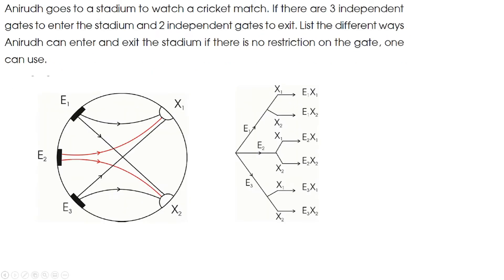Now let us understand this with an example. Anirut goes to a stadium to watch a cricket match. If there are three independent gates to enter the stadium and two independent gates to exit, list the different ways Anirut can enter and exit the stadium if there is no restriction on the gate one can use. So Anirut can enter from E1 and exit through X1, or enter from E1 and exit through X2. Similarly, he can enter from E2 and exit through X1, or enter from E2 and exit through X2.